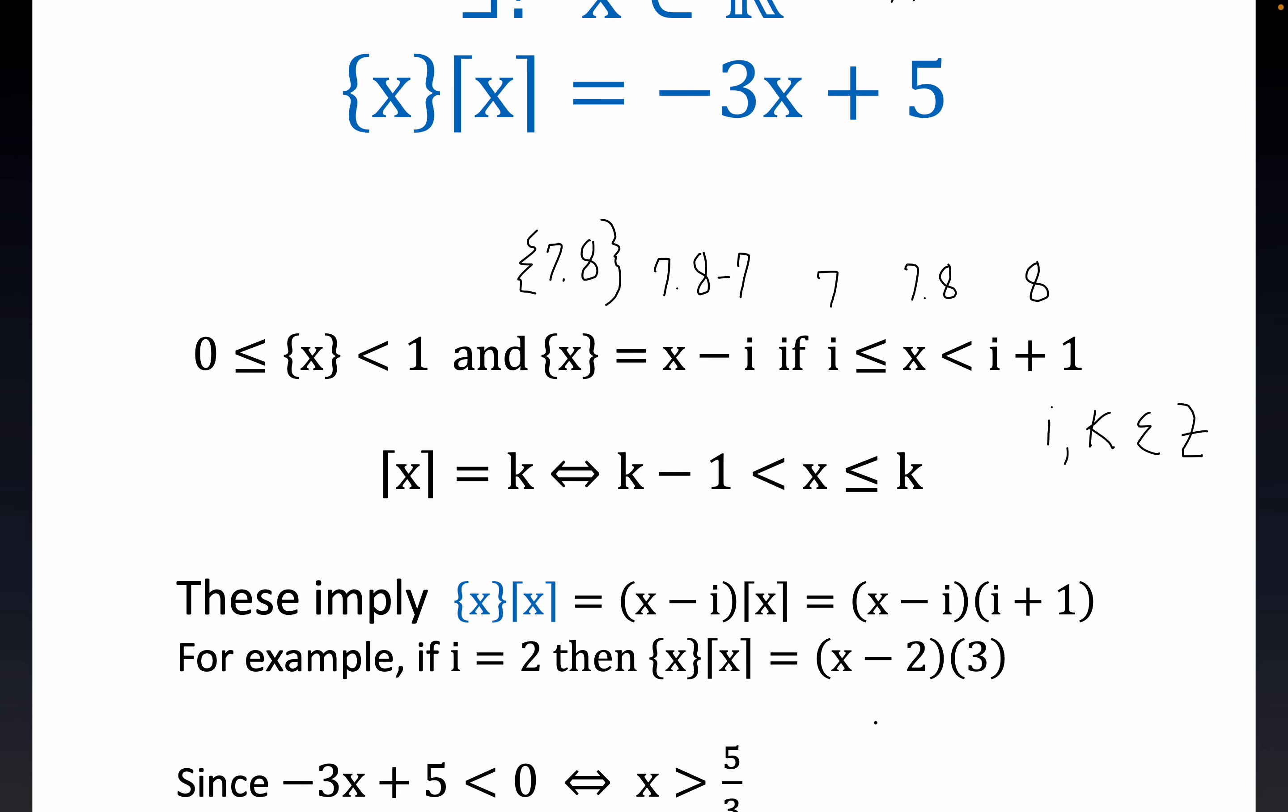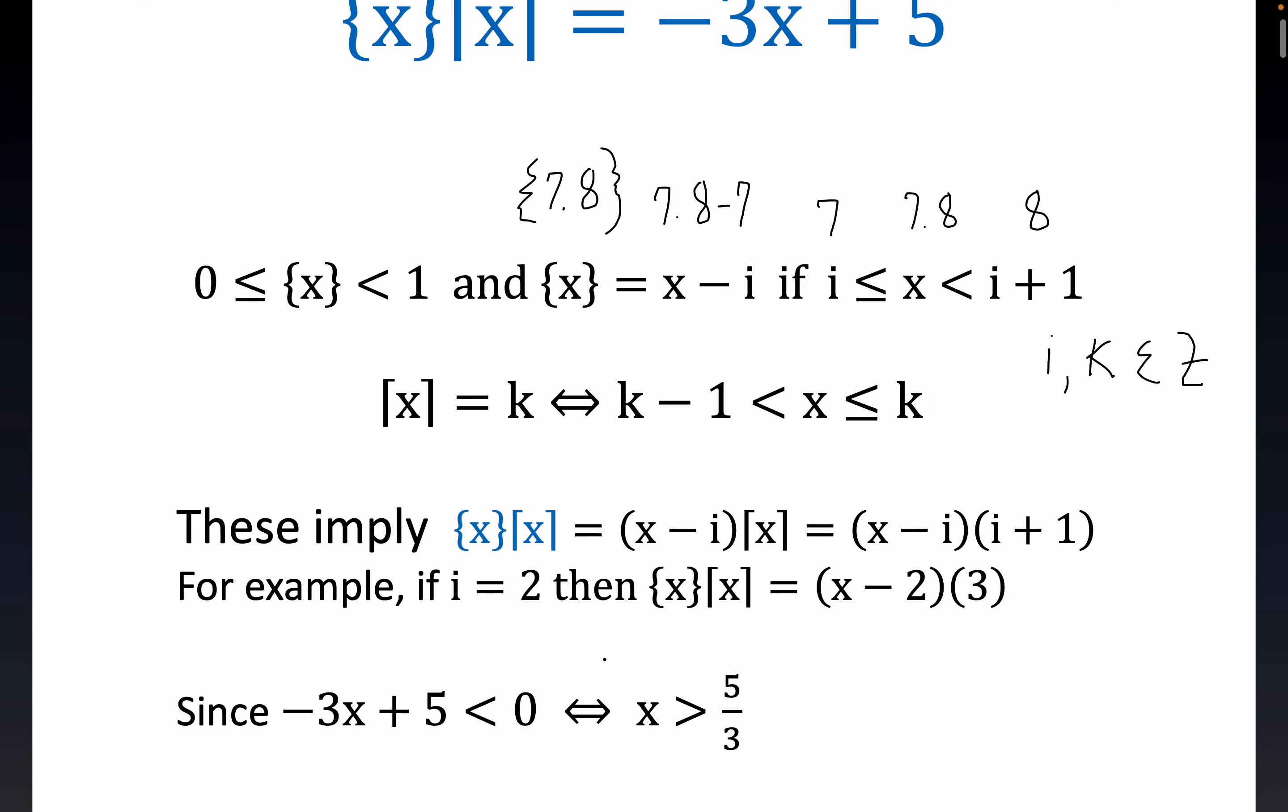Now let's just take a look at this one concrete example here. If i is equal to 2, then we get our object is equal to x minus 2 times 3. Now notice that would be that this piece right here is the ceiling of x. And I'm just explaining this as I go. So that's the ceiling of x because if i is 2, x is between 2 and 3 from right here.